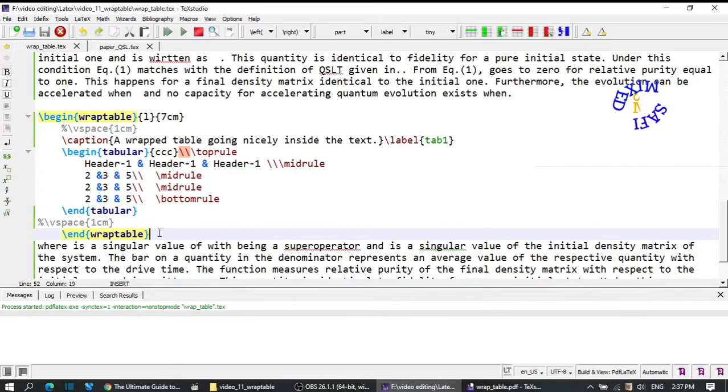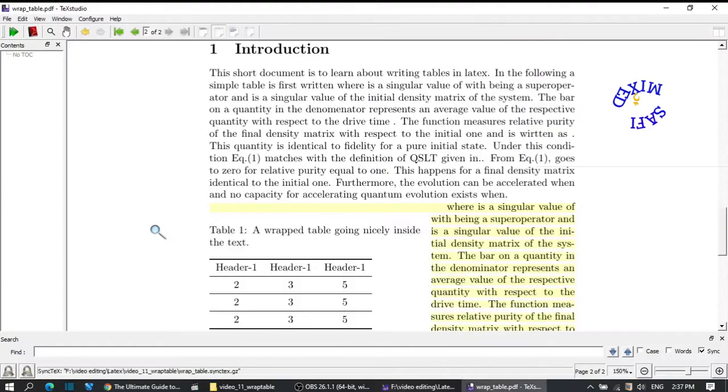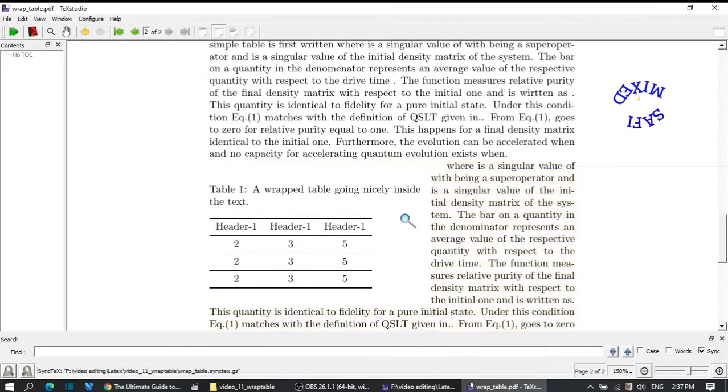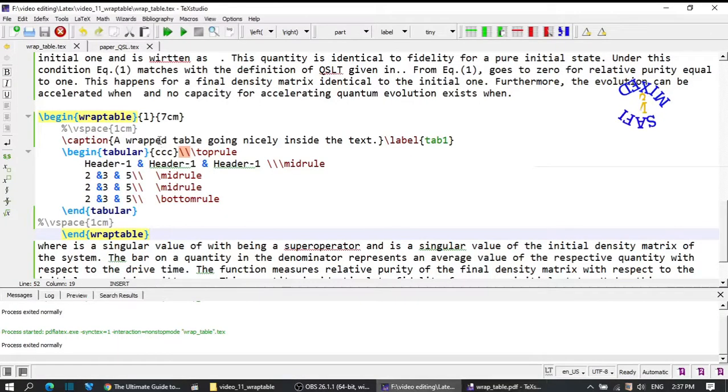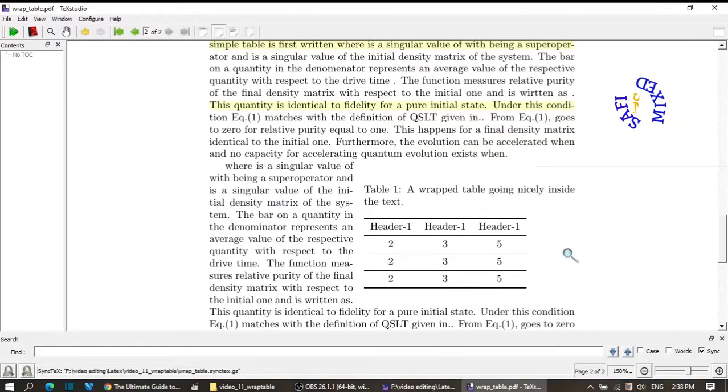So if I build the document, you will see the table will be generated. Here you see the table is generated and it is put to the left of the page. I can change this position to the right by just writing R in the first argument to the wraptable environment.